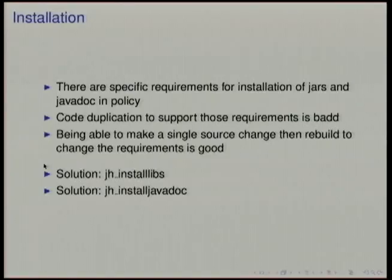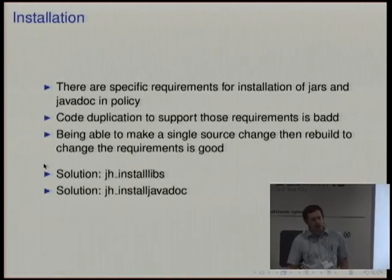Once you've got past building upstream, Java policy gives you a number of requirements for how you install things into your package. In order to avoid code duplication to support all of these, there are a couple of useful Java Helper tools. Additionally, if we want to change some of these requirements in policy, and there's a tool that does it for you, then we only have to rebuild packages — we don't have to make source changes.